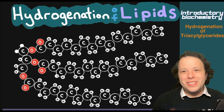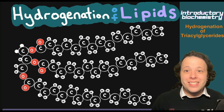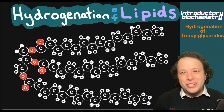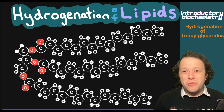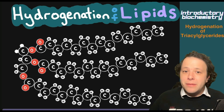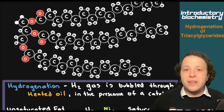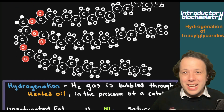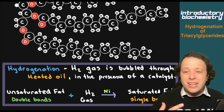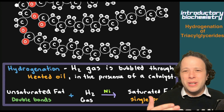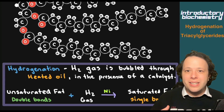Hello and welcome back to another video with Dr. Dan. Today we're going to be looking at the hydrogenation of lipids — meaning that whenever we have a really big fat, sometimes you'll have unsaturated fats. This is something that occurs artificially when you want to buy different things that you find in the grocery store.